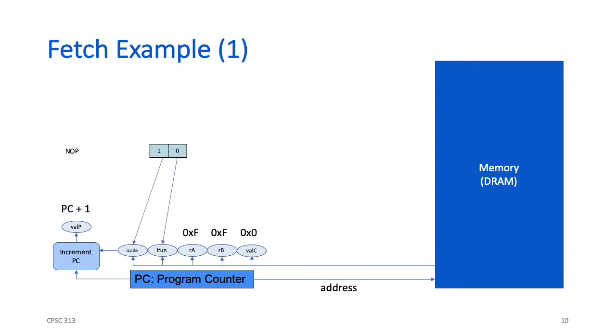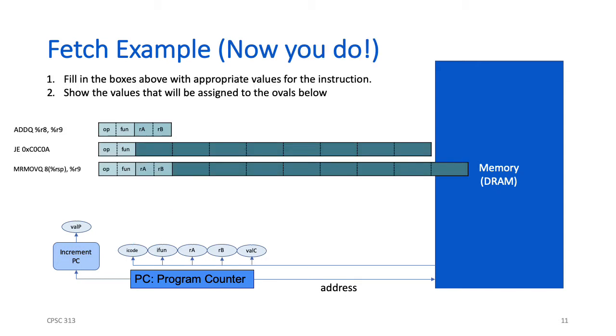Let's look at how this works for the no-op instruction. The opcode for no-op is 1 so that value will get written into I code. The function value is 0, that goes into ifun. The other three registers get their default values, F for RA and RB and 0 for valc. And because this is a single byte instruction, we increment the program pointer by 1. Now it's your turn. Here are three instructions, and what I want you to do is pause the video, map each of these instructions into their encodings, just like we did for no-op, and then make sure you know how those encodings map into the internal registers. I'll then walk you through the answers, but I really want you to stop the video and give this a try first.